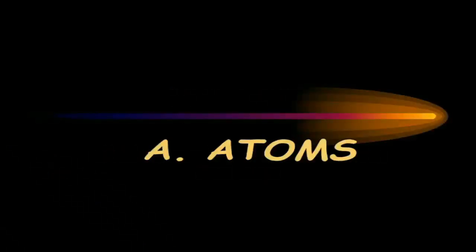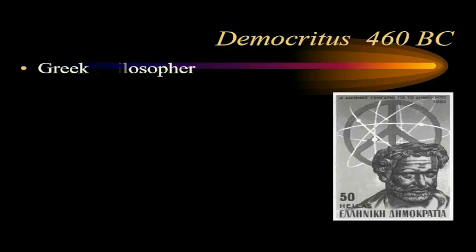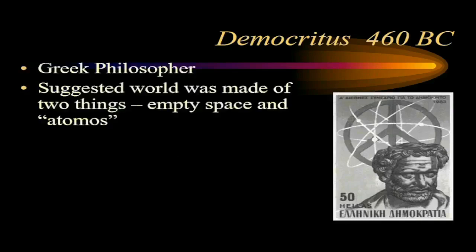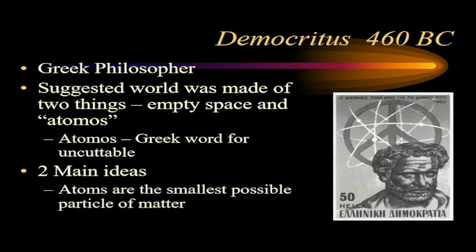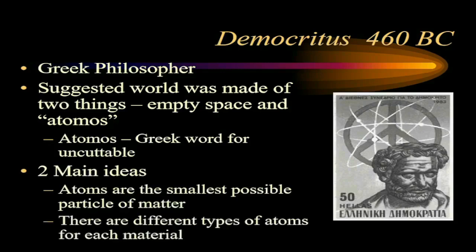The notion of the atom began way back in the time of Democritus, 480 years before Christ was born. Democritus, the Greek philosopher, suggested that the world was made of two things: empty space and 'automos.' Automos is a Greek word meaning 'cannot be cut.' This imposed two main ideas: one, atoms are the smallest possible particle of matter; two, there are different types of atoms for each material. This idea remained untouched for nearly 2,000 years.